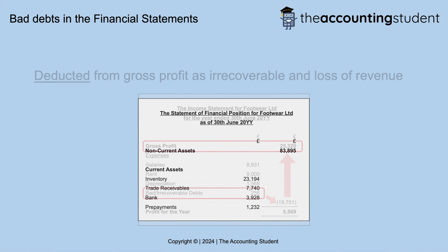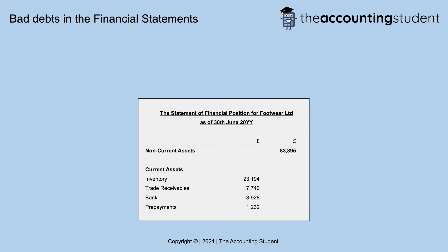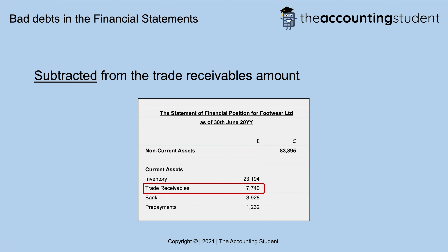On the other hand, with the statement of financial position, also known as the balance sheet, the bad debt or irrecoverable debt will be subtracted from the trade receivables amount. Continuing on from the example, the £255 of bad debt or irrecoverable debt is taken away from the trade receivables total of £7,995. As a result, the business expects to actually receive £7,740 of trade receivables.